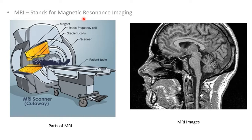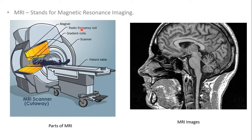Our body is made up mainly of water, and water contains hydrogen molecules, which are like tiny magnets. When a strong magnetic field is applied to the body, all these hydrogen molecules become magnetized and orient in the direction of the applied field. MRI uses a very strong magnet — much stronger than Earth's magnetic field — measured in tesla (also called weber per meter square). Common values are 2 or 3 tesla.